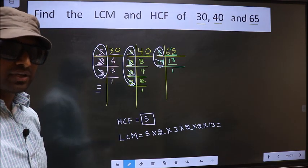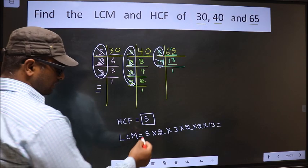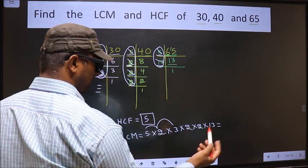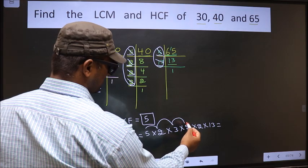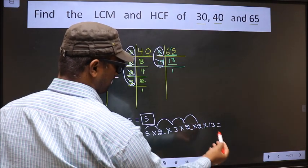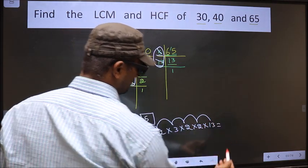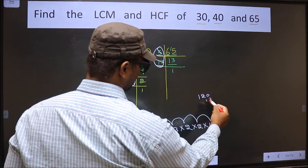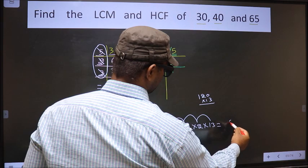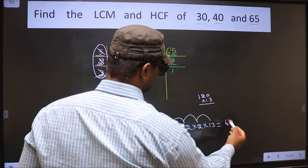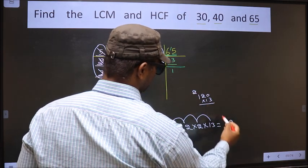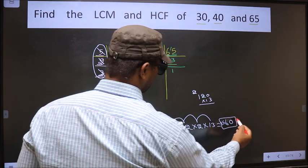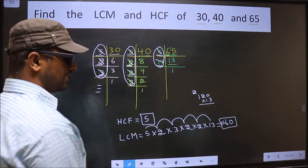Therefore, our LCM is 5×2=10, 10×3=30, 30×2=60, 60×2=120, 120×13. 120×13: 13×2 is 26, 6, 2, 13×1 is 13 plus 2 is 15. So, we got 1560 is our LCM.